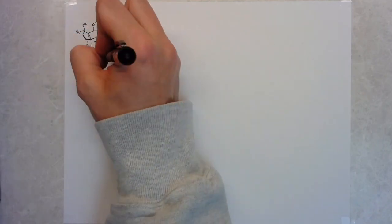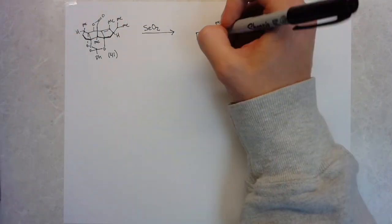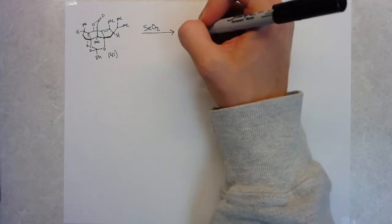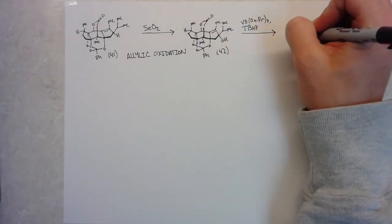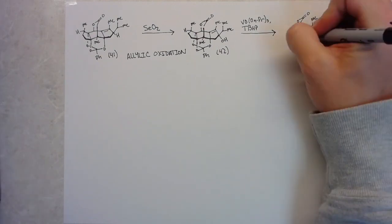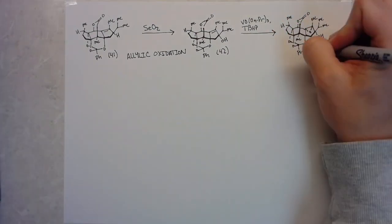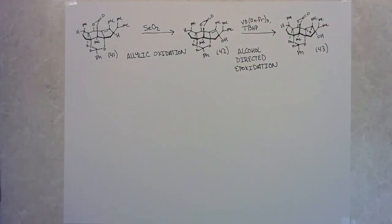The next step is an allylic oxidation with selenium dioxide. The next step is a vanadium-mediated hydroxyl-directed epoxidation. Basically, they're now set up to do the ring closure to give them their pentacyclic core and then all they would have to do is deprotect their alcohols and they're left with plus persianol.